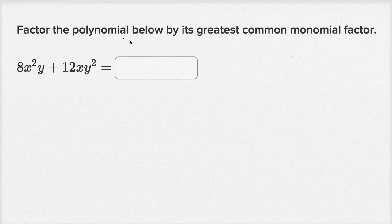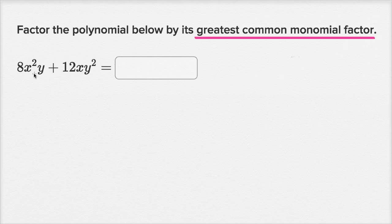We're told to factor the polynomial below by its greatest common monomial factor. So what does that mean? We have these two terms, and I want to figure out their greatest common monomial factor, and then express this with that greatest common monomial factor factored out. So how can we tackle it?